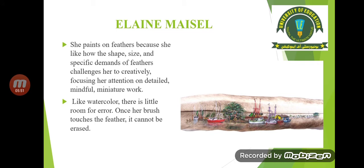Eliane Mezil paints on feathers because she likes how the shape, size, and specific demands of feathers challenge her to creatively focus her attention on detailed, mindful miniature work. The artist has intentionally chosen the feather as a surface. The precision and intricacies require attention to detail in miniature images. Like watercolor, there is little room for error — once her brush touches the feather, it cannot be erased.